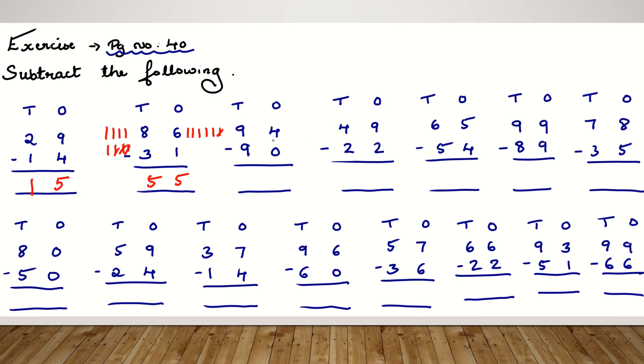Moving to the next question. 94 minus 90. Draw 4 lines and cancel 0 lines. Is it possible to cancel? No, it is not possible. So 4 minus 0, you get the answer 4. 9 minus 9, the answer is 0. Because you draw 9 lines and you cancel 9 lines. So the remaining lines are 0.